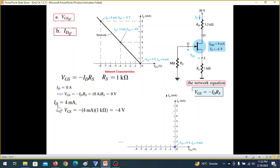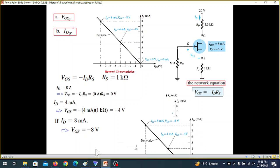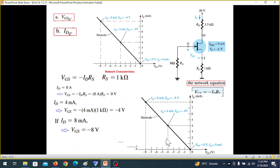Let's say we take ID is 4 milliampere. 4 milliampere. Then VG will be 4 into 1 is minus 4 volt. So that means when ID is 4 back here, then VG will be minus 4. So similarly, when ID is 8, VG will be minus 8. So we can draw this 4 and minus 4 and then 8 and minus 8. And when we join these lines, this is our network equation or network graph.